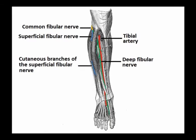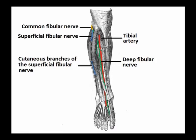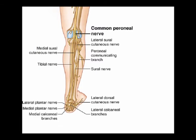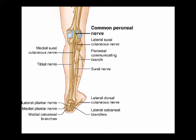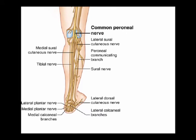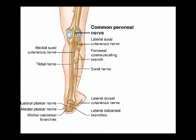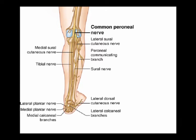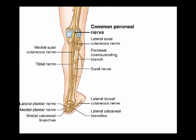The superficial peroneal nerve arises from the common peroneal nerve. Just inferior and lateral to the fibular head at the fibular neck, the common peroneal nerve bifurcates into the superficial peroneal nerve, also known as the superficial fibular nerve, and the deep peroneal nerve, also known as the deep fibular nerve.